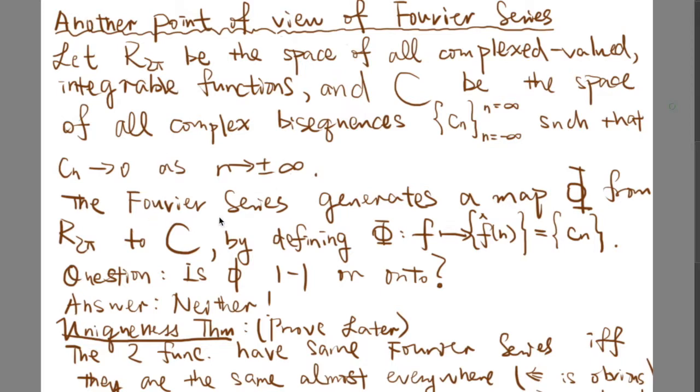As we've discussed, indeed, Fourier series can generate a map from R2π to C. We define the map φ from f to f̂(n). And indeed, what is this? This is indeed the cn, the complex Fourier series coefficient.